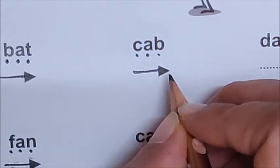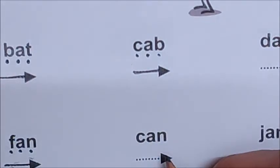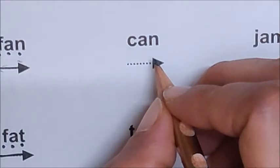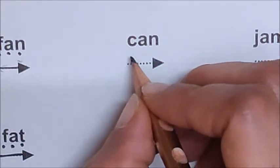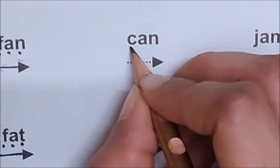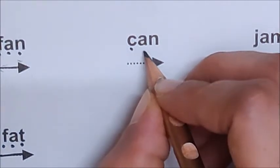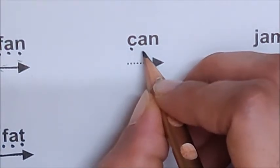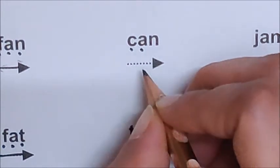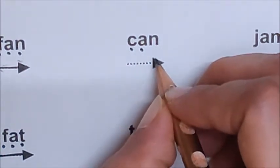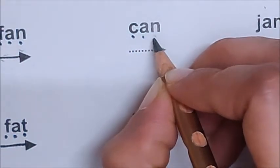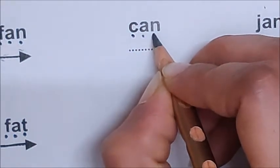Now children, let us go to the next word. Tell me what is the first sound here. K. So put one dot for K. What is the next sound? A. So put one dot for A. What is the last sound? N.